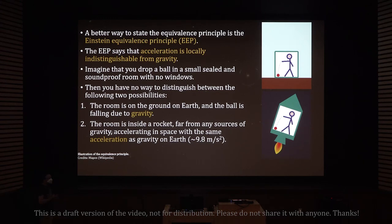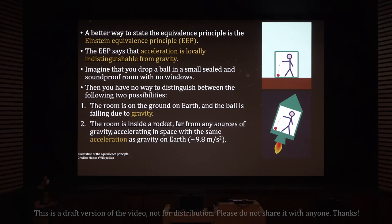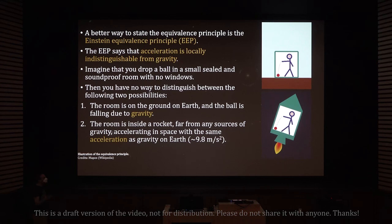A better way to state the equivalence principle that doesn't use mass is the Einstein equivalence principle, or EEP. The Einstein equivalence principle says that acceleration is locally indistinguishable from gravity. Imagine you drop a ball in a small, sealed, soundproof room with no windows — you have no way to distinguish between two possibilities: the room is on the ground on Earth and the ball falls due to gravity, or the room is inside a rocket far from any sources of gravity, accelerating with the same acceleration as gravity on Earth — approximately 9.8 meters per second squared.